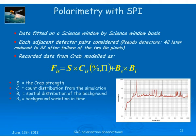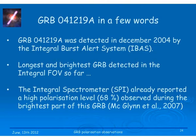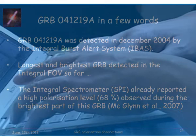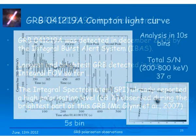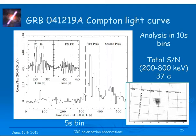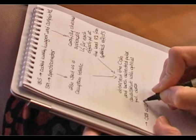Going back to GRBs: we studied the polarization of GRB 041219 with INTEGRAL because it was the brightest GRB in the field of view. The INTEGRAL spectrometer SPI reported a high polarization level of 68% for this burst. We then also analyzed it with IBIS to confirm this value. We cut the light curve into 10-second bins — it was bright enough to have sufficient signal in each 10-second bin — with bins shifted by 5 seconds each time.